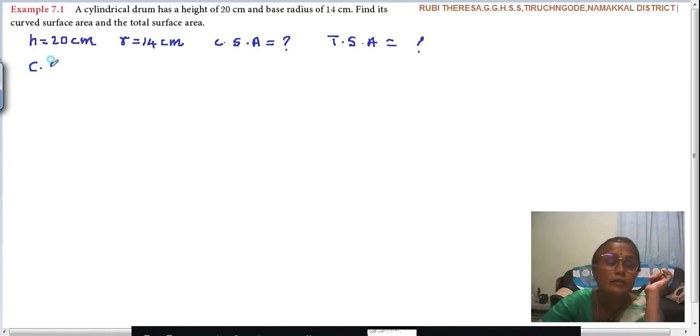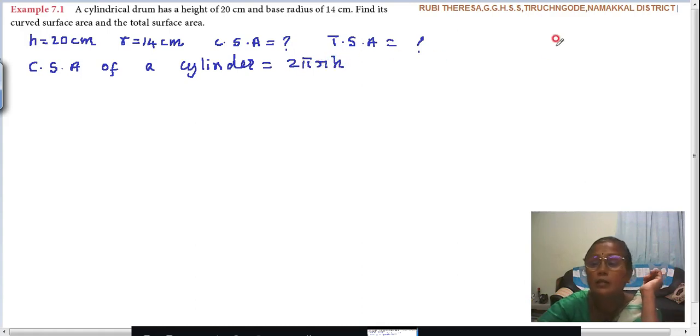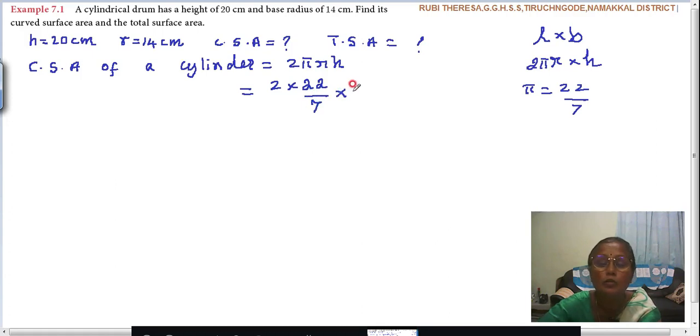So first let me write CSA of cylinder equals 2πrh. You see the numbers - this radius is a multiple of 7. So what is π actually? 22 by 7. So it is better to substitute it here because you will be able to cancel this 7.